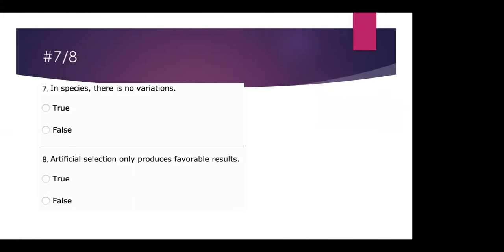Number eight: artificial selection only produces favorable results. This is popular with dogs — we make all these new breeds. Is that true or false? False is correct. You would think it's true because humans are artificially selecting, but sometimes things don't go the way we think. So sometimes we do have unfavorable results. The answer is false.